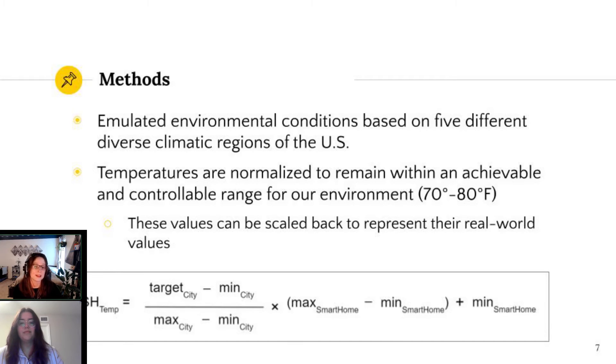In order to evaluate our project application in diverse environments, we chose five different U.S. cities that are located in various climate regions. All simulated temperatures are normalized in order to remain within an achievable and controllable range for our environment, which is between 70 and 80 degrees Fahrenheit. Later, these values can be scaled back to represent their real world values using the formula seen on the screen below.